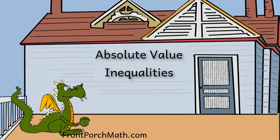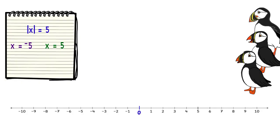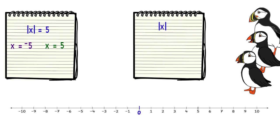We have looked at the absolute value of a number equal to 5. Now let's look at the absolute value of a number that is less than 5. The question is: what are some numbers that are less than 5 spots away from 0, since the absolute value is the distance from 0? We can make a list: 0,